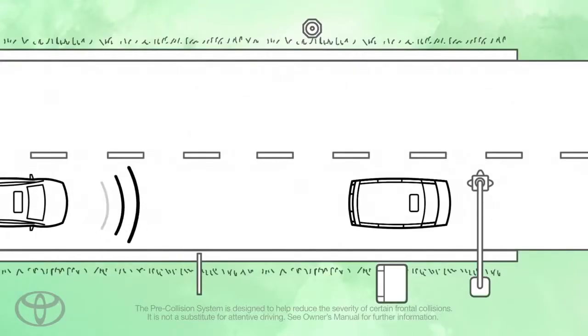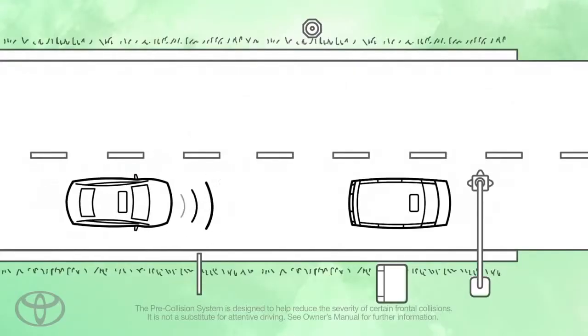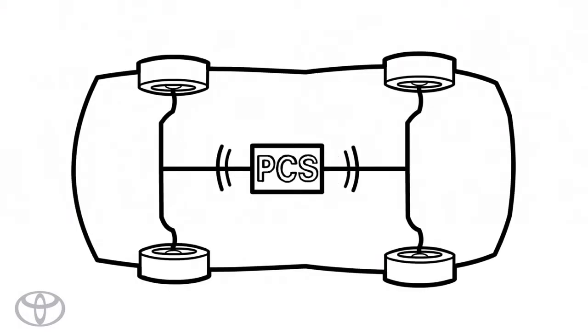When the radar senses a high probability of frontal collision, a sensor behind the grille alerts the driver with a warning light, alarm, and a message in the instrument display to apply the brakes, which are then prepped for maximum braking force.